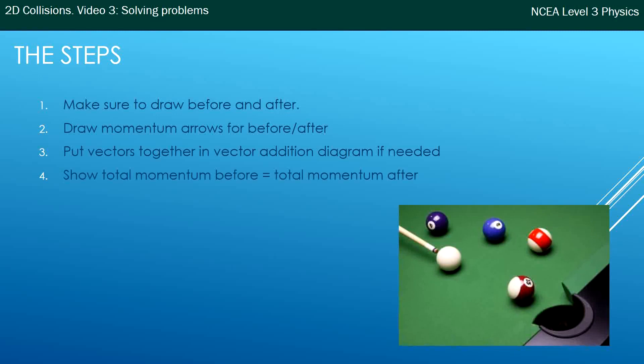Show that the total momentum before is equal to the total momentum afterwards. That's often a sort of hidden step. Once you've got that, you may have a triangle, and if that's the case then you would need to use either Pythagoras, a squared plus b squared equals c squared, or SOHCAHTOA to solve that triangle.